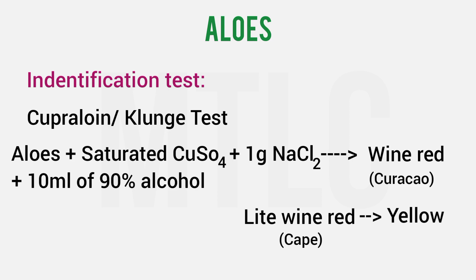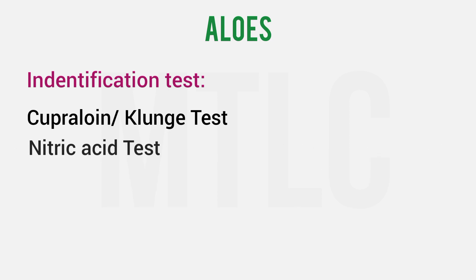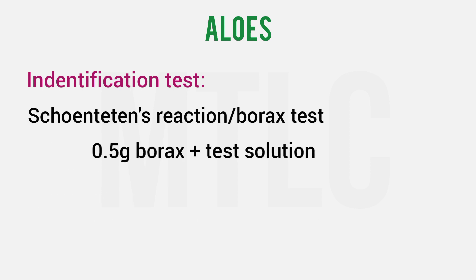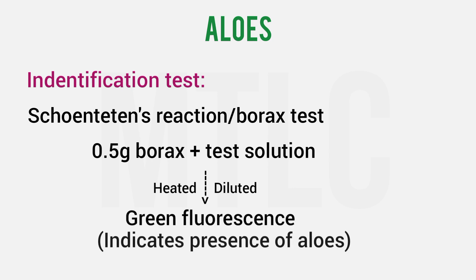The colors distinguish curacao, cape, and socotrine aloes. Apart from that, the nitric acid test, nitrous acid test, bromine test, and Schoutens reaction are also done. The Borax test is also important: add 0.5 g borax, add water, heat, and dilute. A green color fluorescence indicates aloes.